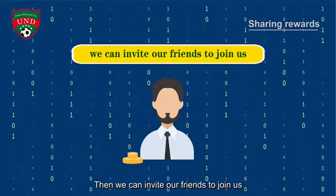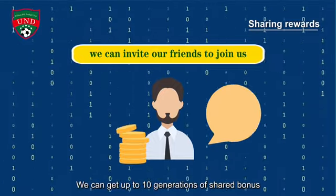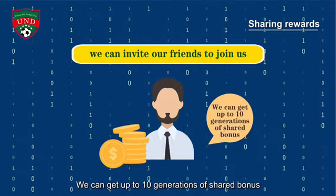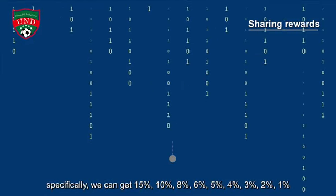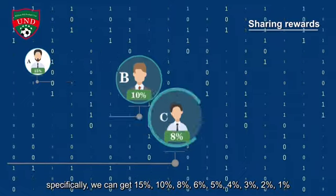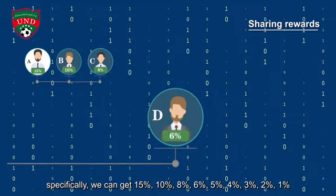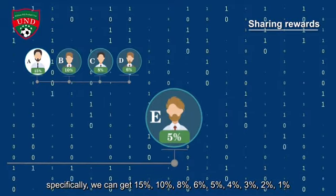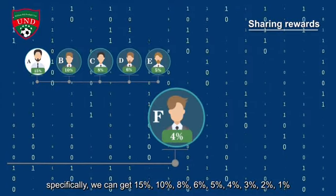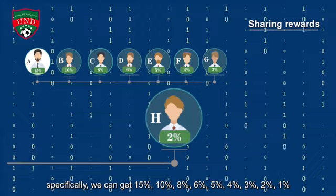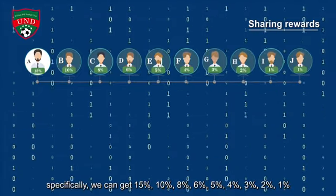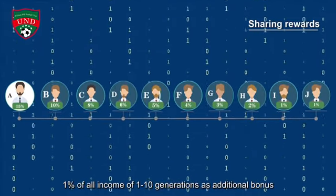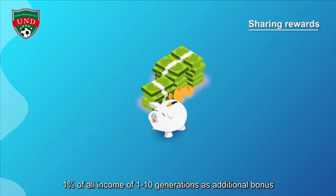We can also invite friends to join us and get up to 10 generations of shared bonus. Specifically, we can get 15%, 10%, 8%, 6%, 5%, 4%, 3%, 2%, 1%, and 1% of all income from generations 1 through 10 as additional bonus.